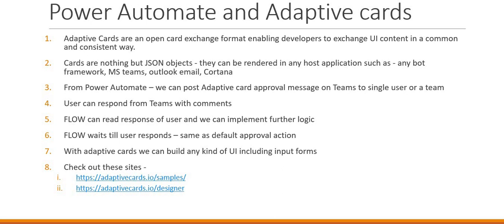You can use these adaptive cards to send messages to your Teams, Outlook email, Cortana, or any bot framework — you can use them across various products. In Power Automate we have actions available where you can send a message to a user in Teams or the whole team. The user can respond from Teams itself with or without comments, depending on how you design the UI. The flow is also able to read the response from the Teams chat and on that basis you can complete your approval process in the flow itself.